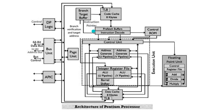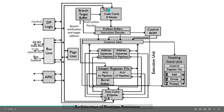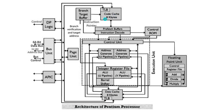The execution unit contains U-pipe and V-pipe, each with its separate ALU and five operating stages. The control ROM provides microcode that directly controls U-pipe and V-pipe. The data and code cache are organized in a two-way associative set cache with 128 sets and two lines of 32 bytes each. The code cache connects with the prefetch buffer through a 256-bit bus, allowing 32 bytes of opcode to be buffered in one clock cycle. The on-chip advanced programmable interrupt controller manages interrupts and offers 8086 compatibility.